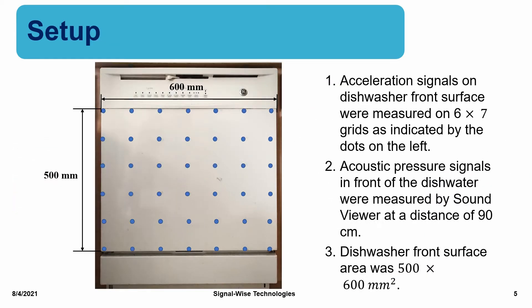Here is a typical household dishwasher. Four accelerometers were used to measure surface acceleration signals on the dishwasher front surface over 6 x 7 grids as indicated by the dots on the left. Acoustic pressure signals were measured by Sound Viewer at a distance of 90 cm. The dishwasher front surface area was 500 x 600 mm².